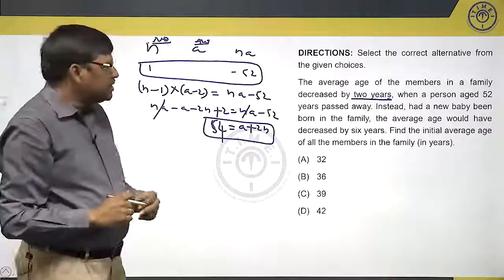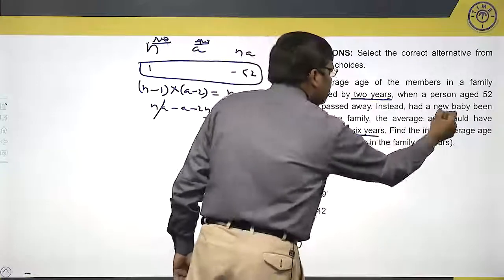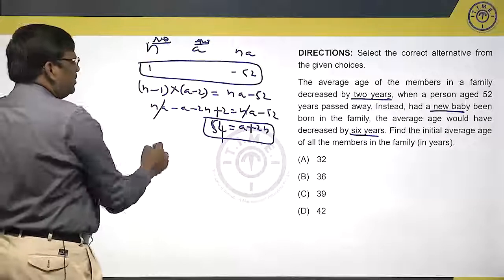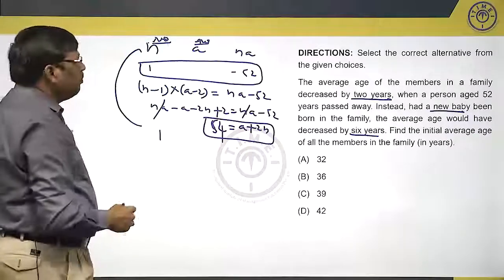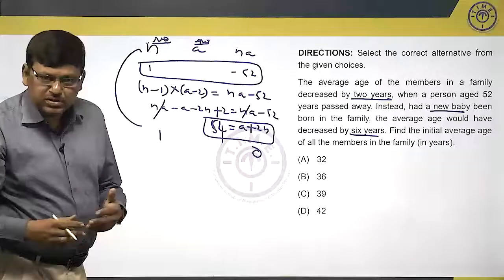What the problem says? The average would have decreased by 6 years when, if a new baby born in the family. If a new baby born, if I take this, there is one more person. But the baby is born means the baby will not add any to the sum.